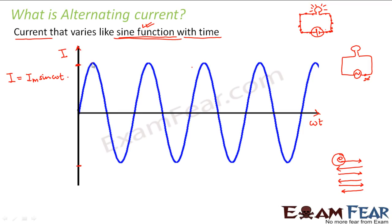The current varies between two extremes — this maximum value is often known as the peak value. We call this peak value Im, which is the peak value of alternating current. Unlike DC current where current has a fixed magnitude — say, 2 amperes — in AC current you cannot specify a single magnitude because the current is changing its magnitude at every instant of time.